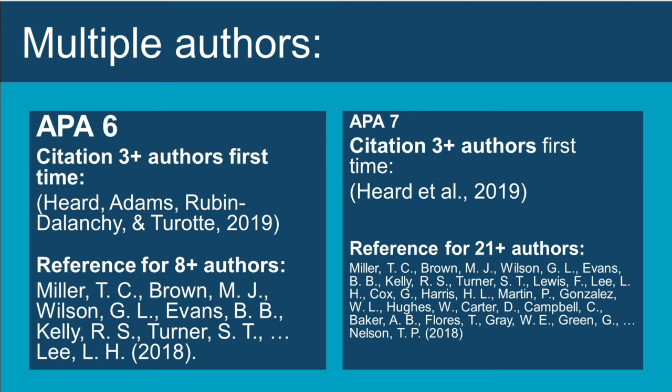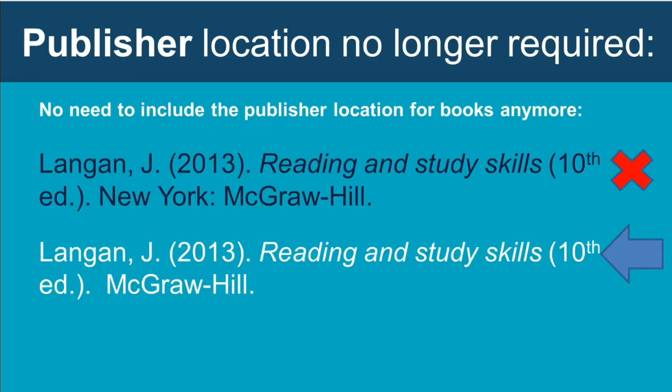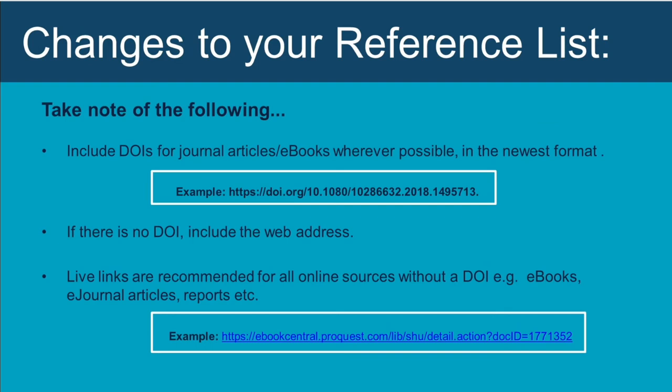In terms of your reference list, there are just a few changes to be aware of. If there are 21 or more authors, include the names of the first 19 authors followed by three dots or ellipses — no ampersand — and then the family name of the final author. There should never be more than 20 names listed in a reference. For textbooks and ebooks, no publisher location is needed anymore. APA 7 is also pushing for DOIs — digital object identifiers — and there is a revised format for DOIs.